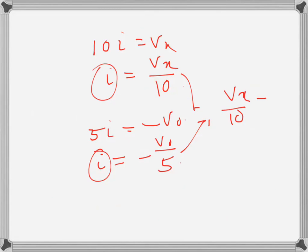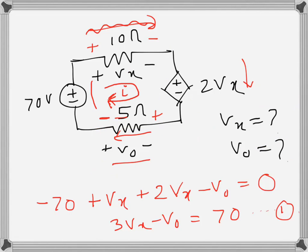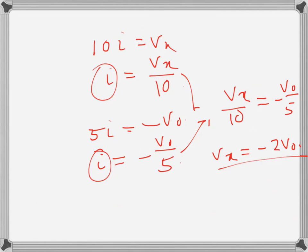So vx over 10 is equal to minus v naught over 5, or vx is equal to minus 2v naught. So we have this relation between vx and v naught, and we use this—we substitute vx here in this equation.